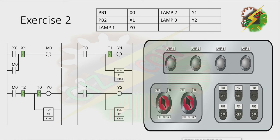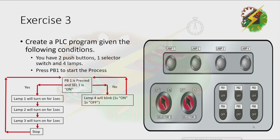Let's go to our next exercise. Exercise 3. Create a PLC program given the following conditions. You have two push buttons, one selector switch, and four lamps. Press PB1 to start the process. The process will monitor the status of PB1 and selector switch 1. If the condition is not met, lamp 4 will blink. This process will only run if the selector switch is on. The only difference is when PB1 is pressed or not. If PB1 is not pressed, lamp 4 will continue to blink. But if PB1 is pressed, it will perform this process. Let's have our demonstration.